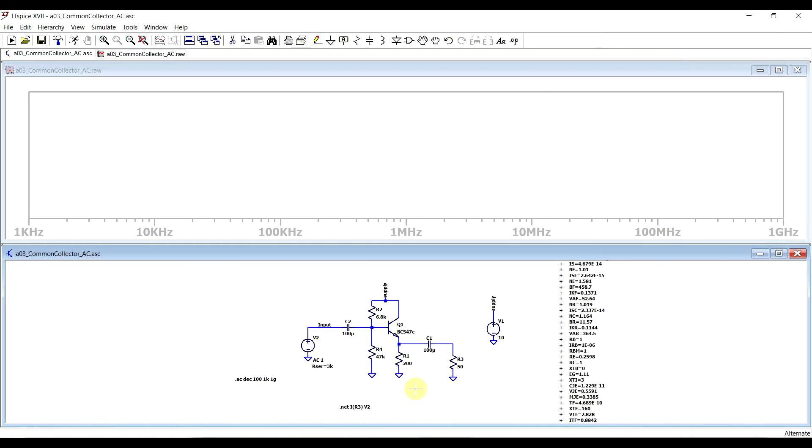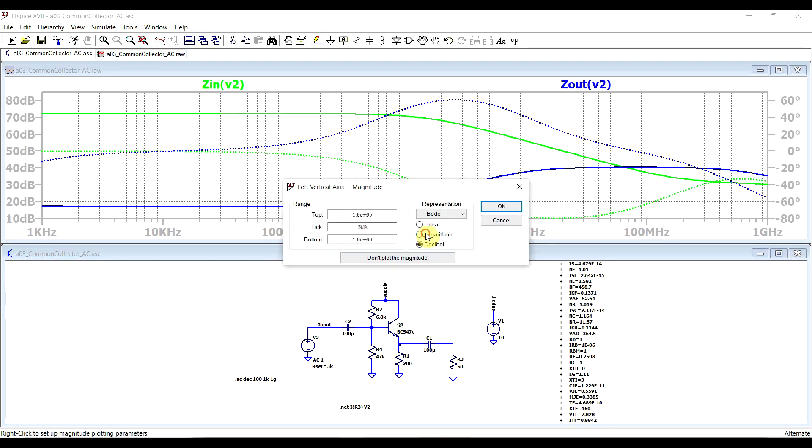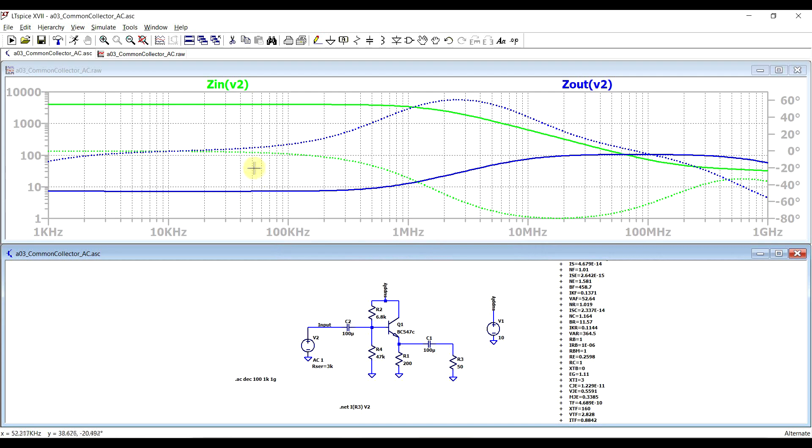These will be under the traces added by the .NET statement, and we can just rescale this a bit. We can now see the big benefit of the common collector amplifier.